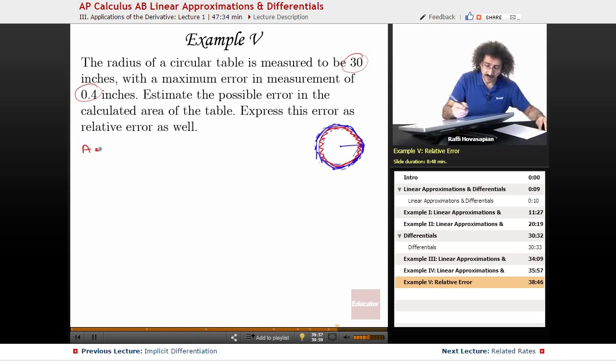Okay, so we'll do both of those. So the area, we know that the area of a circle is πr². Well, the differential, if I change 30 to 30.4 or to 29.6, that 0.4 is my differential. That's my dr. So dr here equals 0.4 plus or minus.